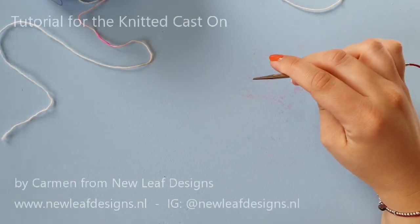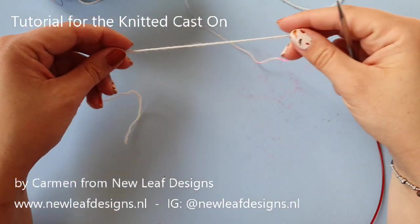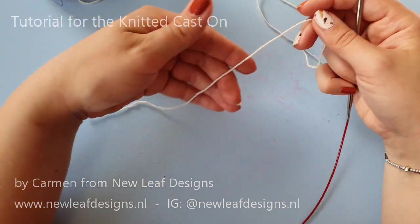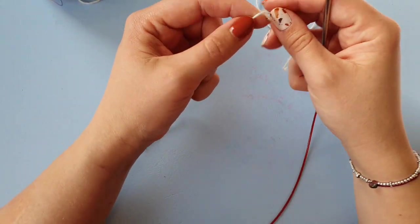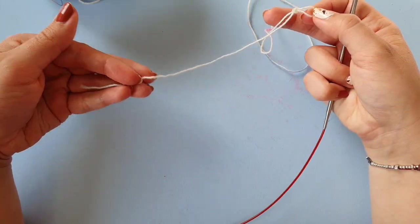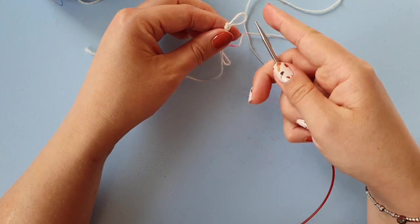In this short video, I'll show you how to do the knitted cast-on. It is stretchier than the long tail cast-on and you don't need a long tail, just a length of yarn that will allow you to sew in the end.